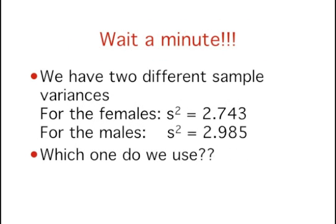Normally, we estimate the variance of the populations using the variance of the sample. But we just said that the variances of the two populations, that is, the female and male populations, are the same. So, which sample variance do we use to estimate the population variance?